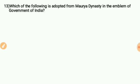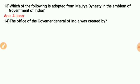Which element is adopted from the Maurya Dynasty in the emblem of the Government of India? It was the Four Lions. The Four Lions of the national emblem were adopted from the Maurya Dynasty.